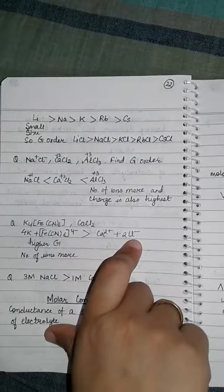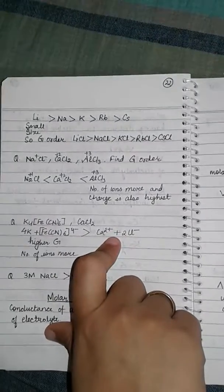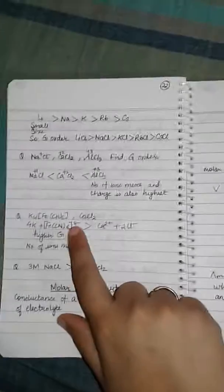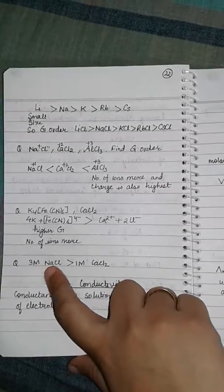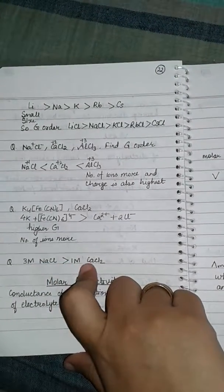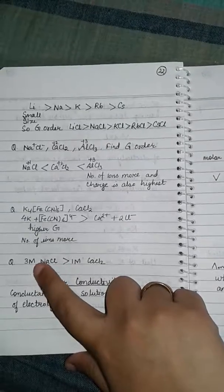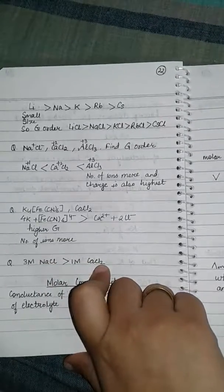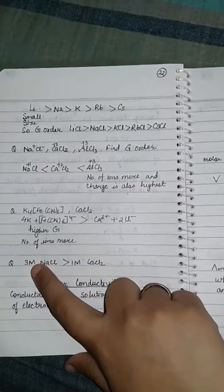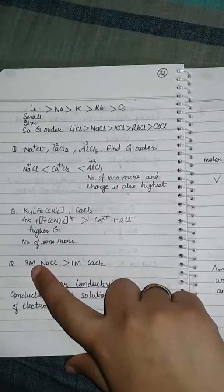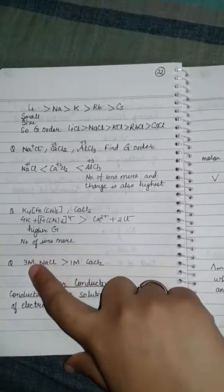Next question is which has higher conductance: three molar NaCl or one molar CaCl2? Since the concentration of NaCl is three molar here, it will have higher conductance.